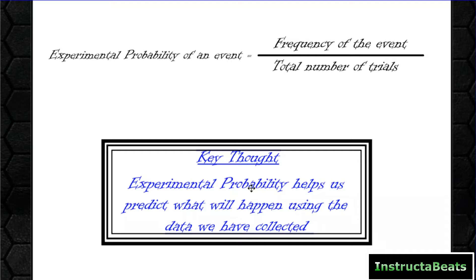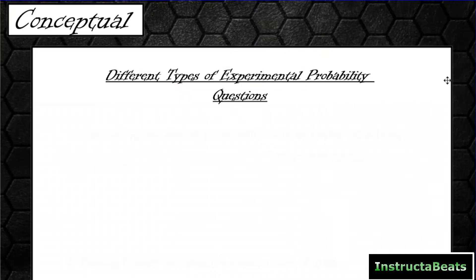As we have a larger sample size, the experimental probability will get closer and closer to the theoretical probability. But today we're going to be focusing on using our experimental probability after an experiment has started to predict what we think is going to happen next. There are going to be two different types of experimental probability questions that we'll be answering today. There's many more, but we're only going to focus on two of them.